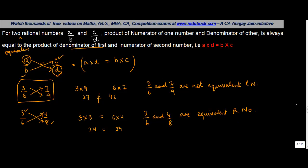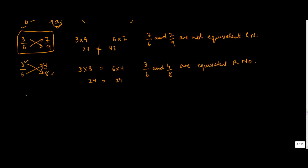Let us take one small problem based on this. If x upon 7 and 13 upon 91 are equivalent rational numbers, find the value of x.